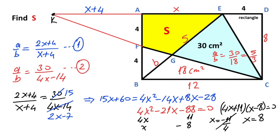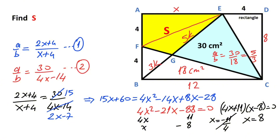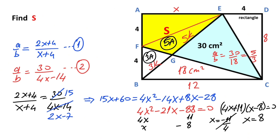That means if this length is 5k, this other length must equal 3k. After that, if we extend these two points and focus on the triangles — the triangles have the same height — that means if this area equals 3a, this triangle area must equal 5a. Now if we focus on triangle EFE, these two triangles have the same height and the same base, meaning these two triangles have the same area.